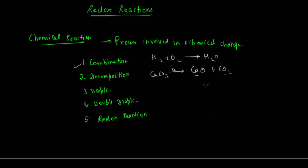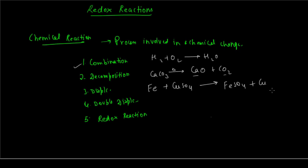Next is displacement reaction — a reaction where a more reactive metal displaces a less reactive metal from a salt solution. For example, iron, which is a more reactive metal, combines with copper sulfate, the sulfate salt of the less reactive metal copper. The iron displaces copper and forms ferrous sulfate plus copper solid. Here, iron as a reactive metal displaces copper to form ferrous sulfate and copper.